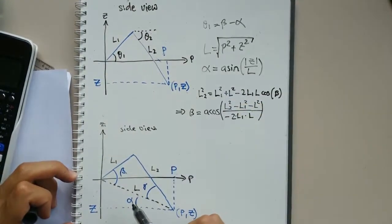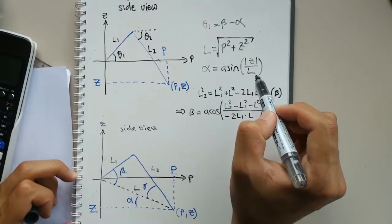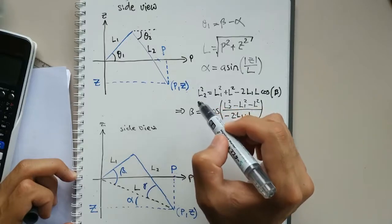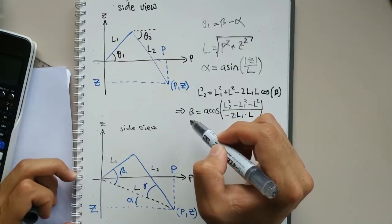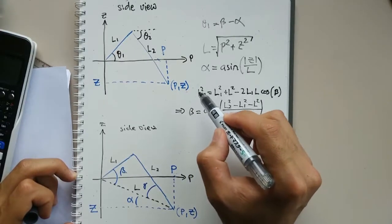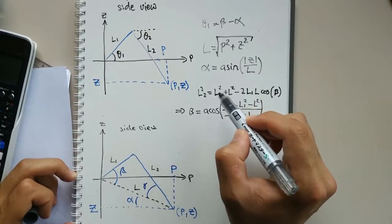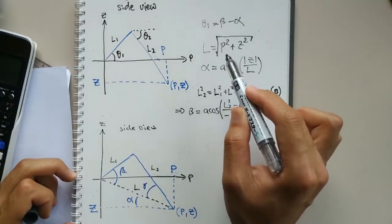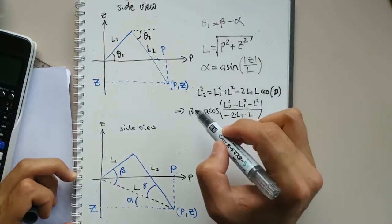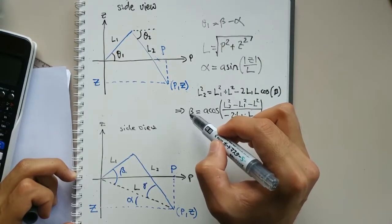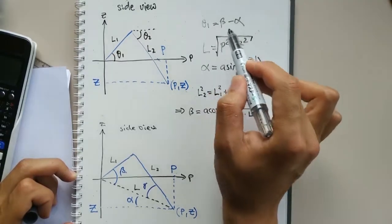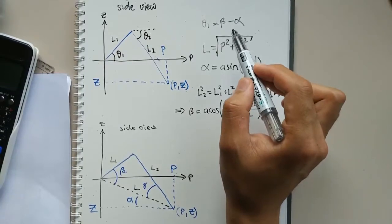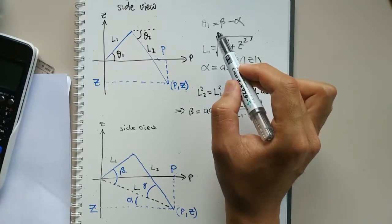Now we can find angle alpha using the inverse sine function. We can use the cosine rule to find angle beta using the length constants and L that we just found. Once we've got beta and alpha, we can solve for angle theta 1, which is our second output.